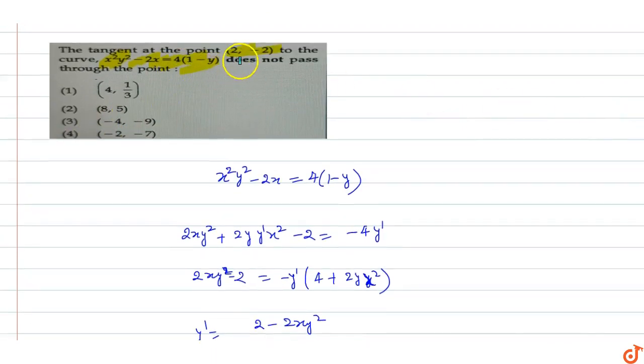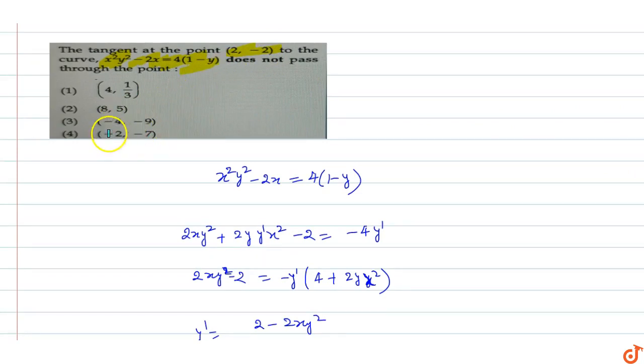The tangent at point (2, -2) to the curve does not pass through the point (-2, -7). So option 4 is the correct answer.